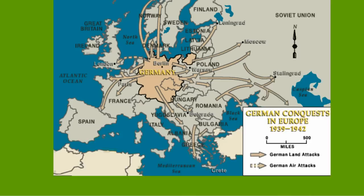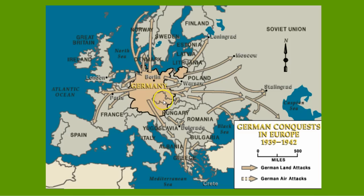Germany, on the other hand, attacked many more countries in Europe through Hitler's attempt to conquer the world. It began with neighboring countries of Czechoslovakia and Austria, then moved west to Norway, Belgium, and France, and then attempted to take over England, but failed.